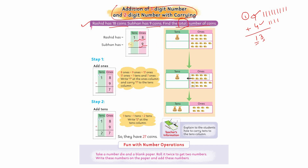یہ 'total' word نے بتایا کہ addition apply ہوگی۔ تو ہم نے لکھ لیا Rashid کے پاس اتنے ہیں، Subhan کے پاس اتنے ہیں۔ یہ symbol لگانے کا مقصد ہے کہ ہم اس کا total find کرنا چاہ رہے ہیں۔ اس میں دو steps ہیں جو آپ نے follow کرنے ہیں۔